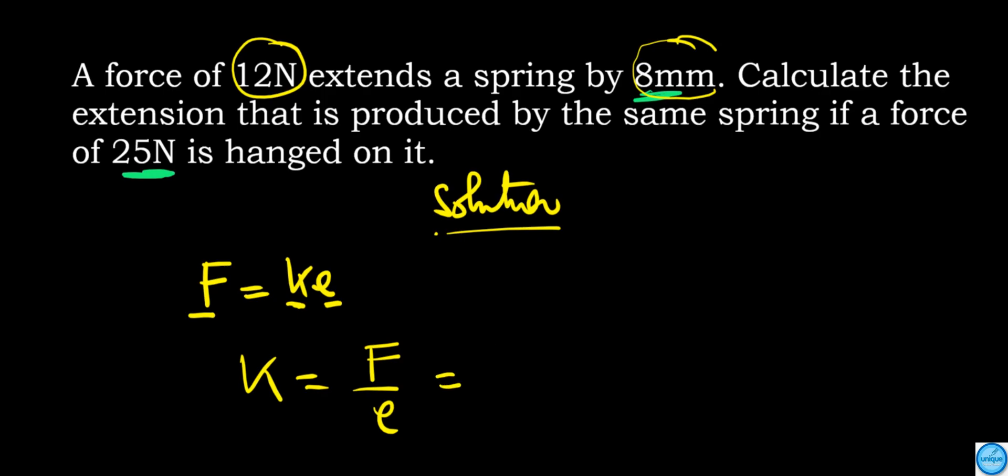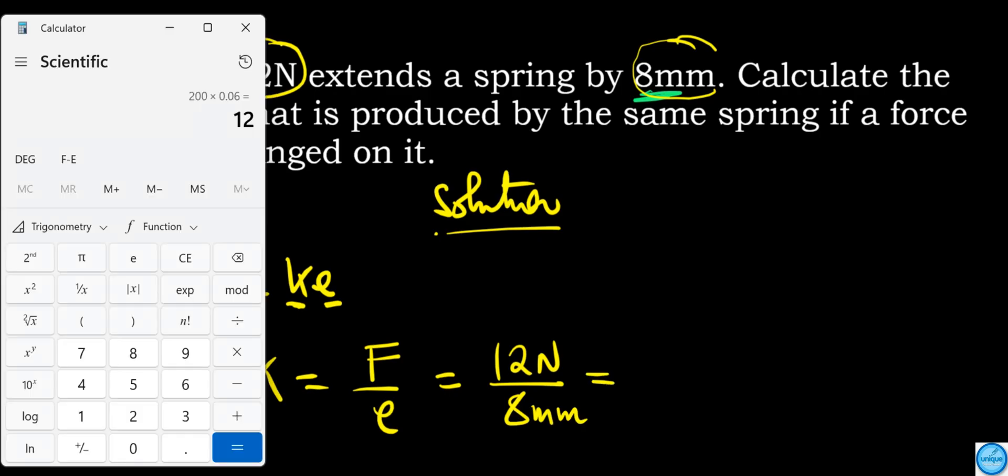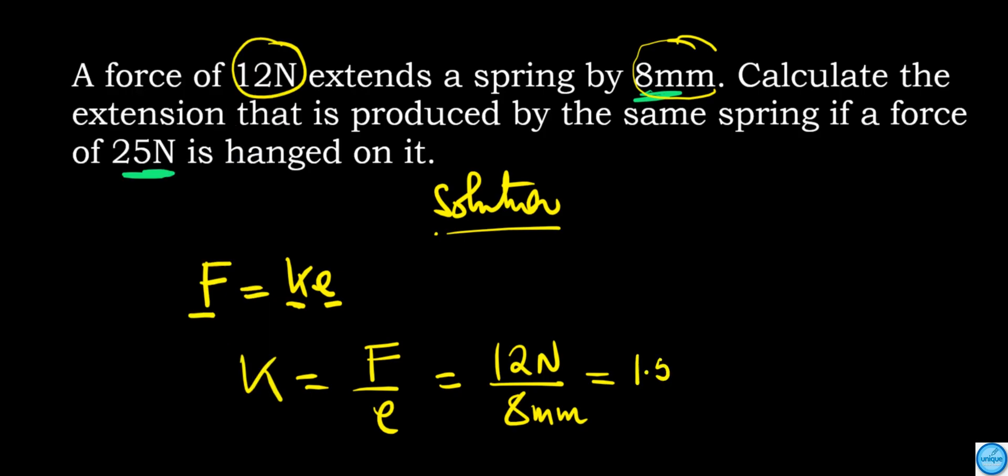Our force is 12 Newtons divided by our extension which is 8 millimeters. So k equals 12 divided by 8, which gives 1.5 Newtons per millimeter.